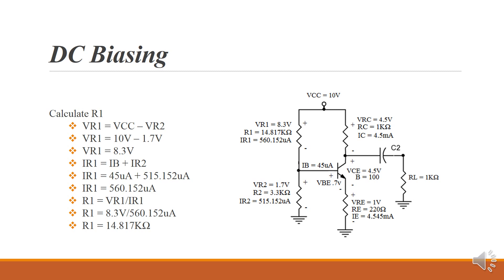Using Ohm's law, we can calculate R1. So VR1 divided by IR1 gives us R1. So 8.3 volts divided by 560.152 microamps gives us 14.817k ohms.